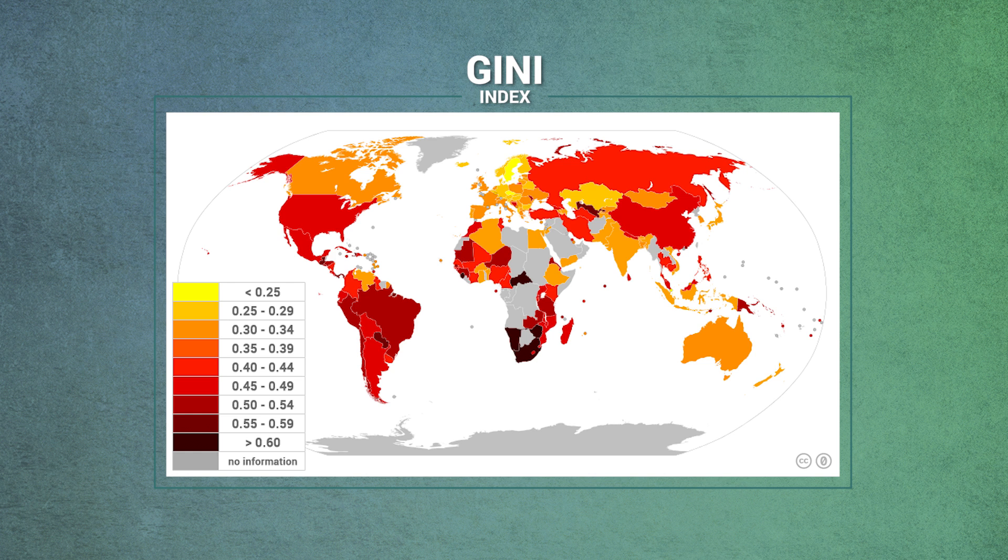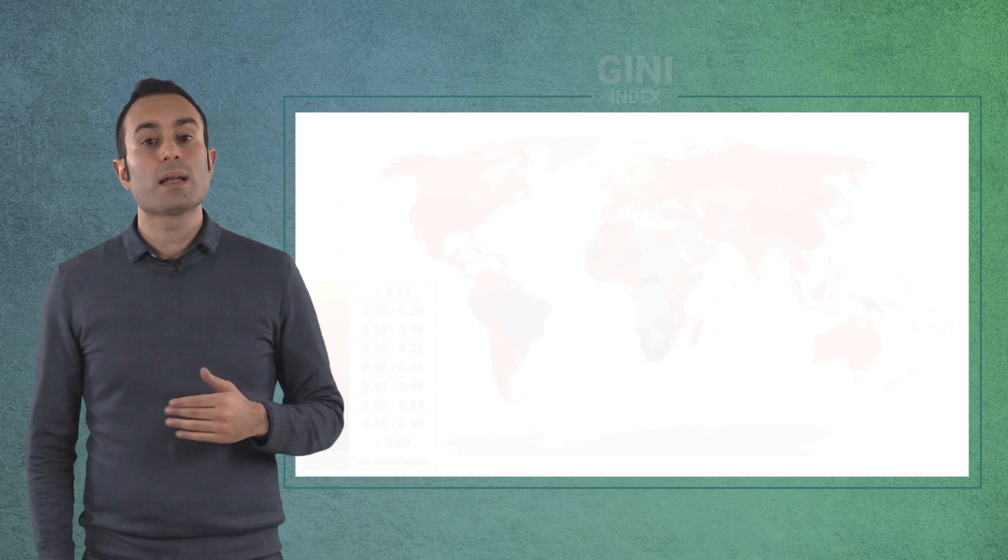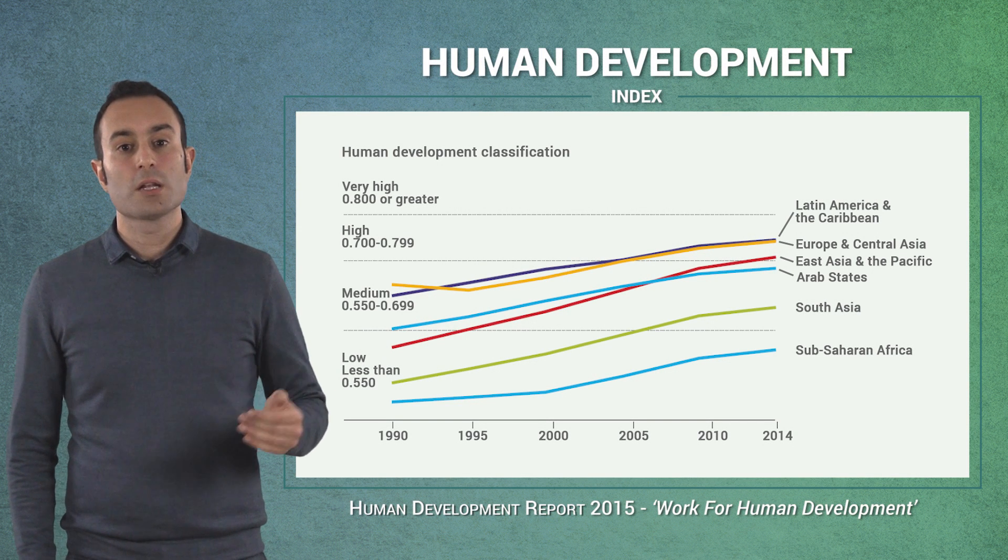Despite this difference among rich and poor people, the wellness of countries has increased from the last century. This is visible by analyzing the growth of the Human Development Index.